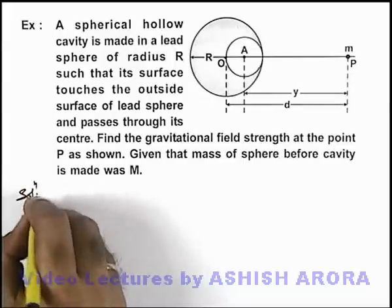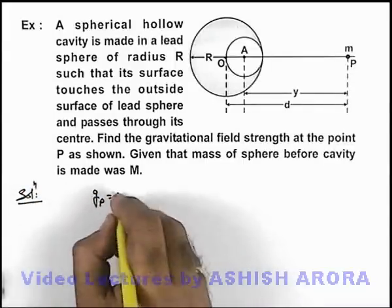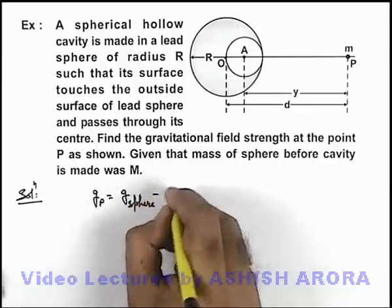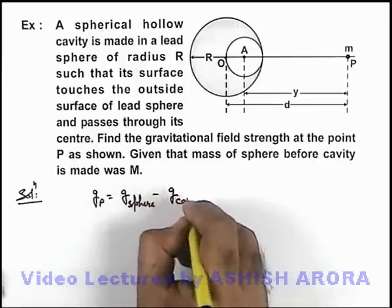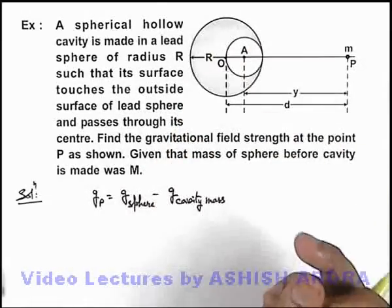So in this situation, we can simply write that the gravitational field at point P is equal to the gravitational field due to the complete sphere minus the gravitational field due to the mass of the cavity, as the mass of the cavity is removed.